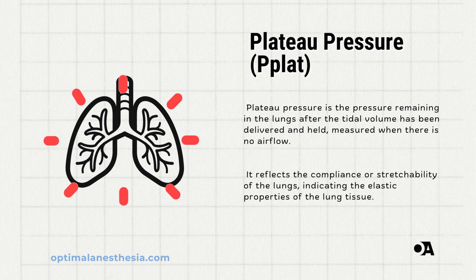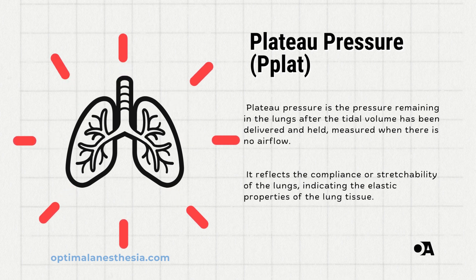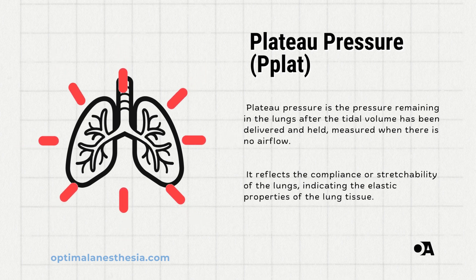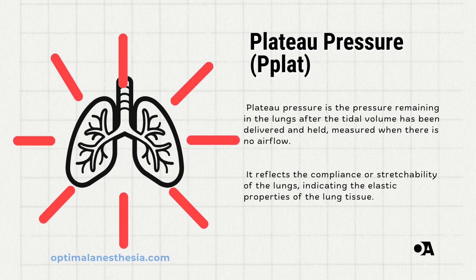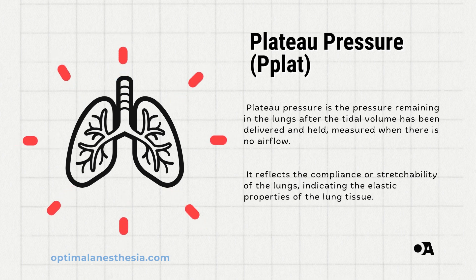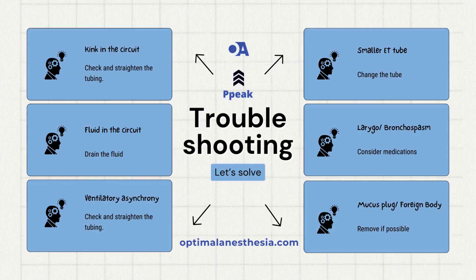Plateau pressure is a bit different. It's the pressure remaining in the lungs after the tidal volume — the amount of air delivered to the lungs — has been given and held for a moment. This is measured when there's no flow of air, meaning it reflects the compliance, or stretchability, of the lungs. If you notice the peak airway pressure is climbing but the plateau pressure remains normal, this typically indicates an issue with elevated resistance in the airways rather than a problem with lung compliance.